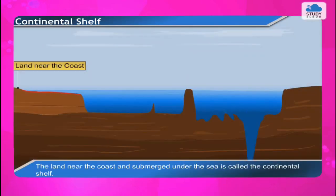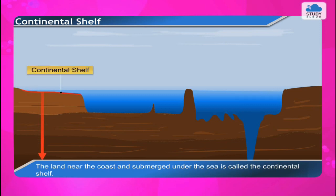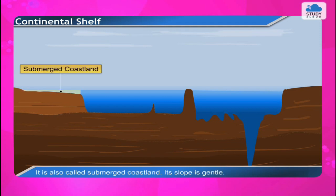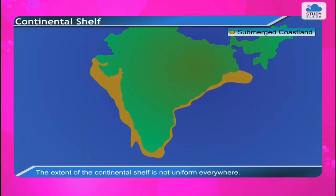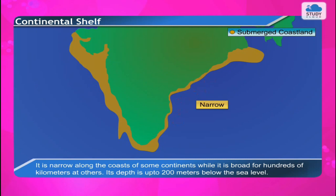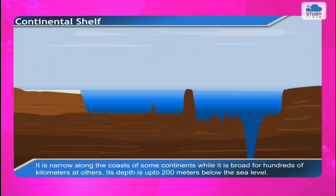The land near the coast and submerged under the sea is called the continental shelf. This is the shallowest part of the ocean bed, also called submerged coastland. Its slope is gentle. The extent of the continental shelf is not uniform everywhere — it is narrow along some coasts while broad for hundreds of kilometers along others. Its depth is up to 200 meters below sea level.